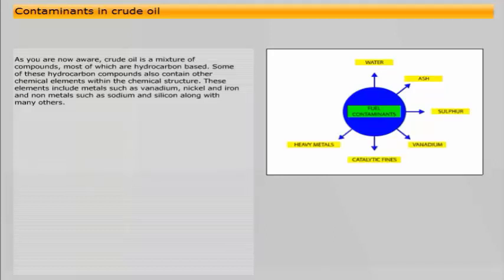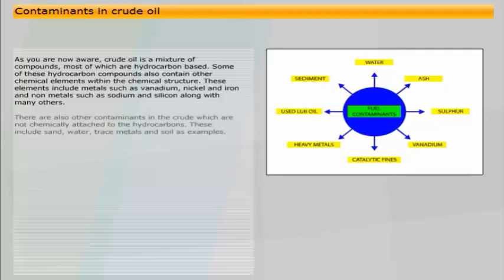Some of these hydrocarbon compounds also contain other chemical elements within the chemical structure. These elements include metals such as vanadium, nickel, and iron, and non-metals such as sodium and silicon along with many others. There are also other contaminants in the crude which are not chemically attached to the hydrocarbons. These include sand, water, trace metals, and soil as examples.